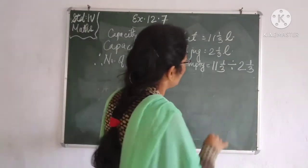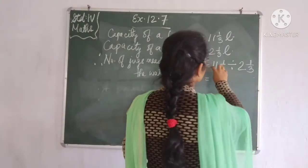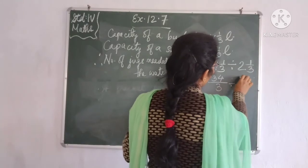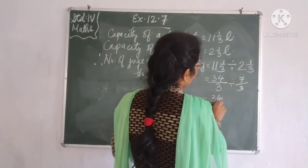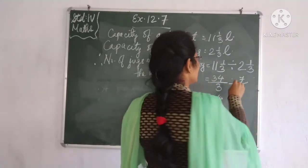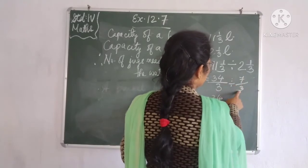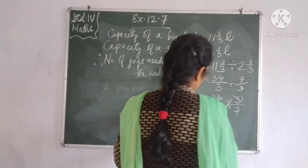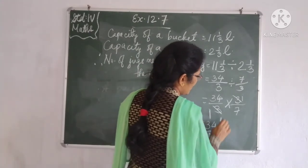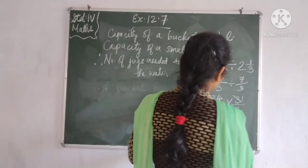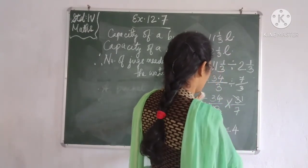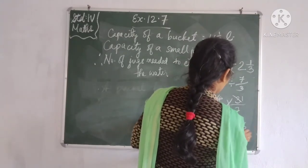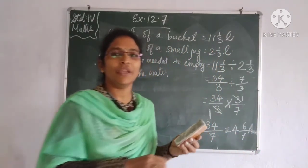Both are mixed fractions, so we convert to improper fractions. 11 and 1/3 = 34/3, and 2 and 1/3 = 7/3. Now 34/3 divided by 7/3 — we multiply by the reciprocal, which is 3/7. The 3 and 3 cancel, leaving 34/7. Converting to a mixed fraction: 4 sevens are 28, and 34 minus 28 = 6, so the answer is 4 and 6/7 jugs.